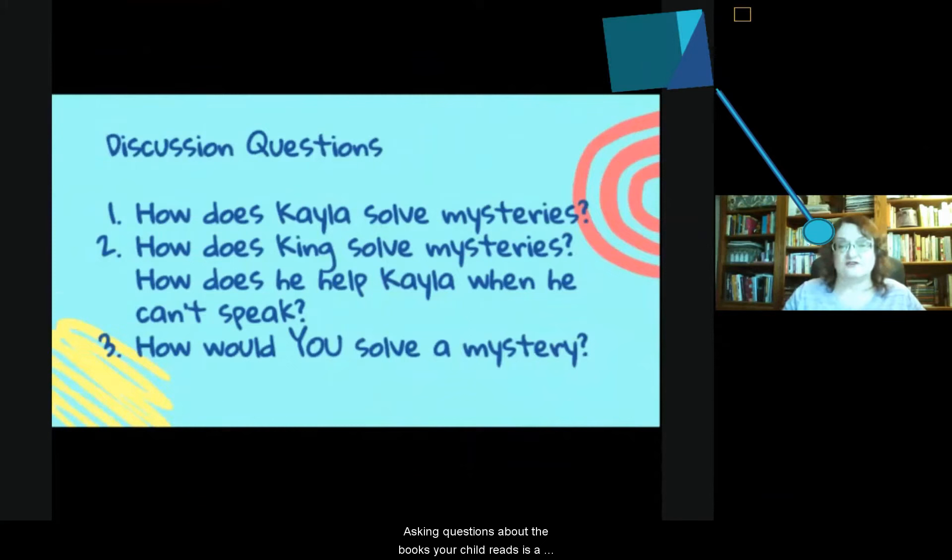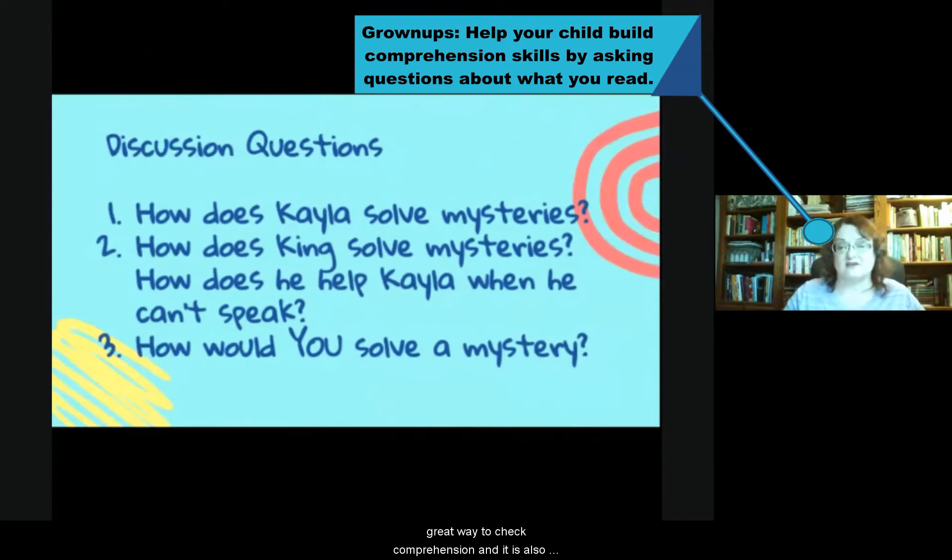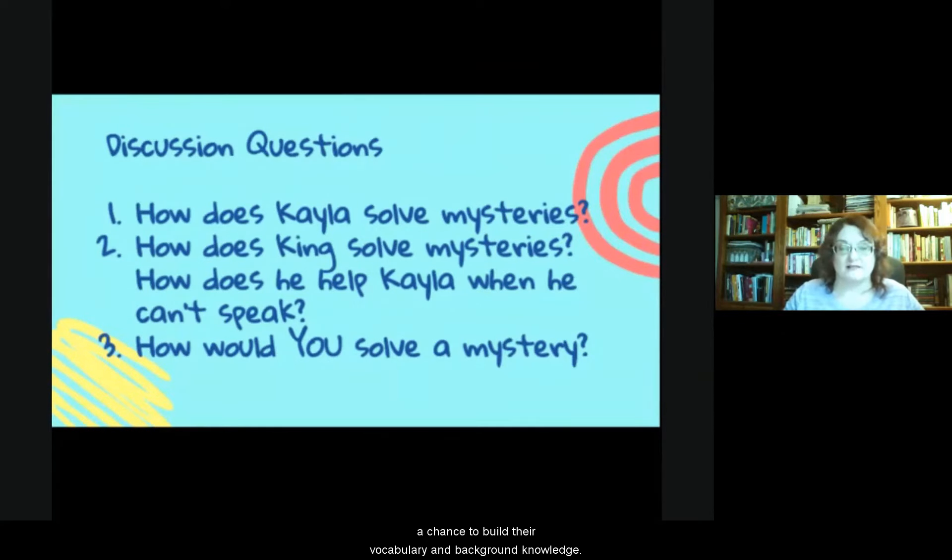Asking questions about the books your child reads is a great way to check comprehension. And it is also a chance to build their vocabulary and background knowledge. Ask about the characters, the action in the book, or you could even talk about the illustrations and build their visual literacy skills. We came up with these three questions.